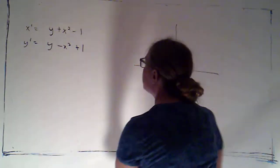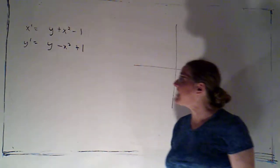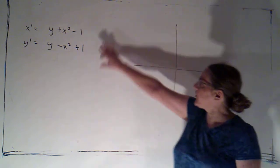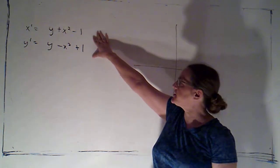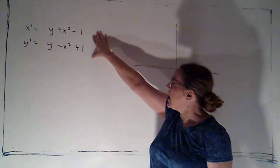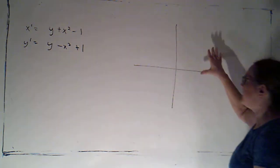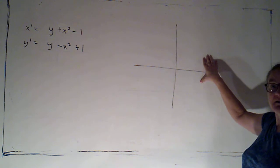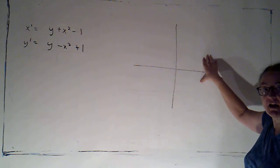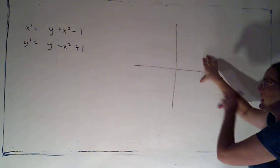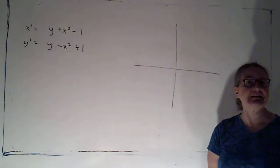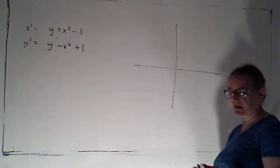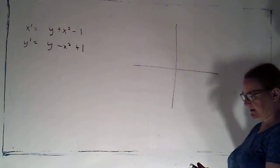The topic requested for review is nullclines. Given a first-order system, the goal is to graph the x and y nullclines and use them to get as much of a sense of what the phase portrait looks like as possible.